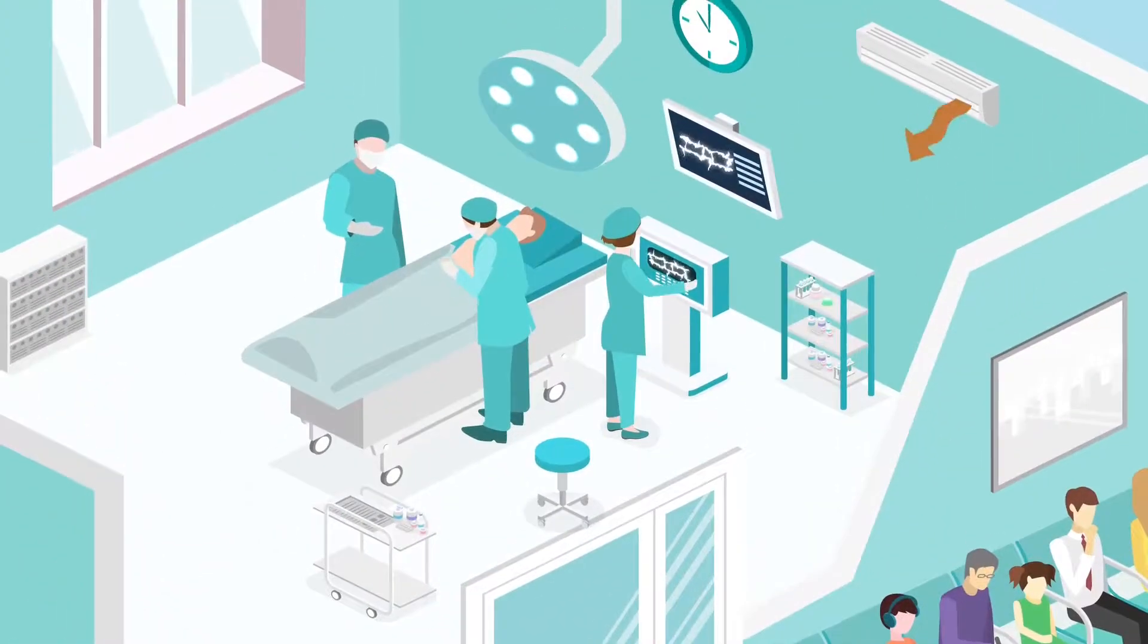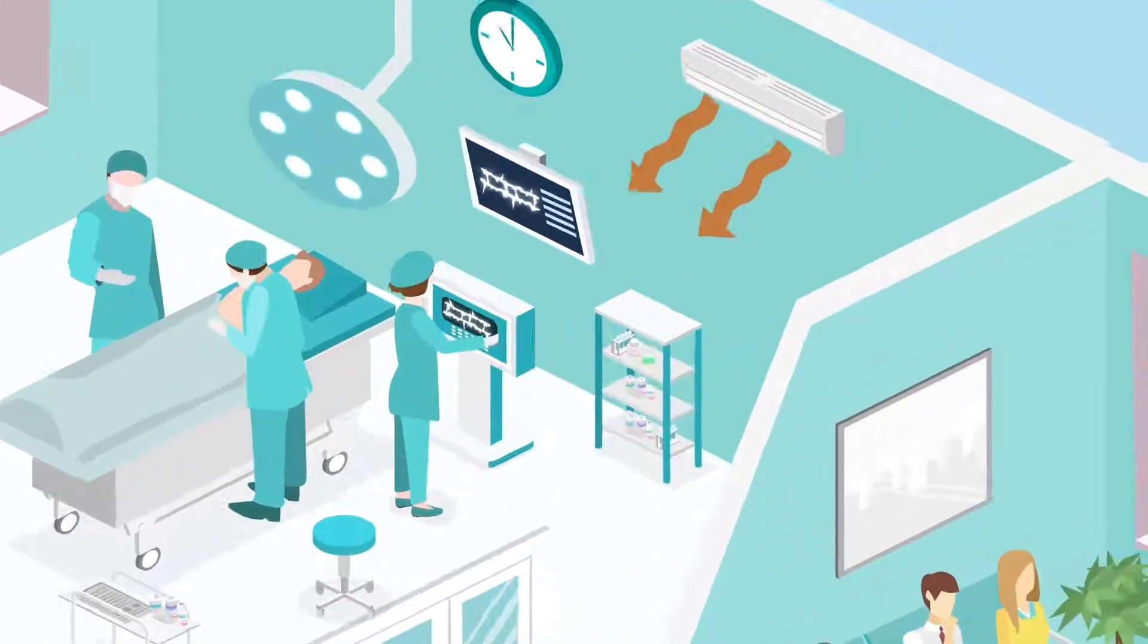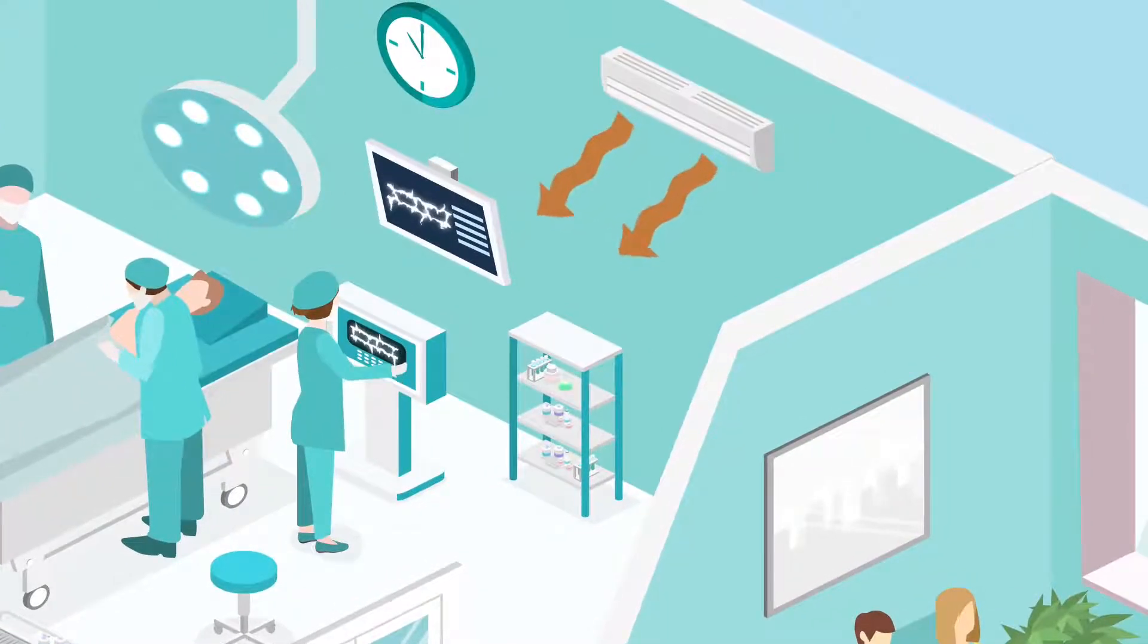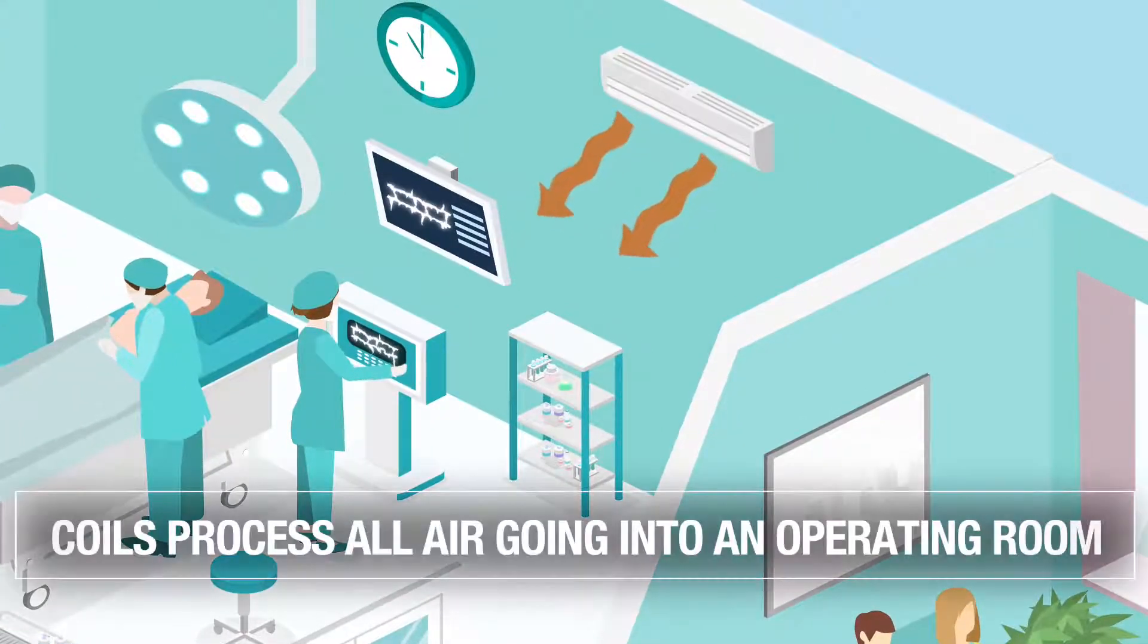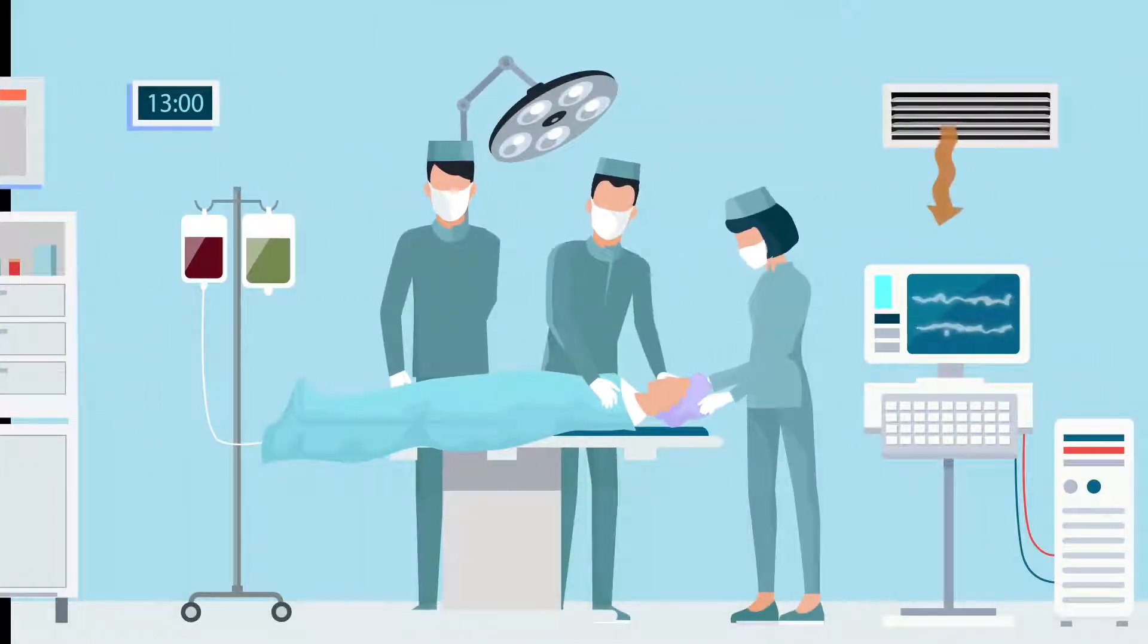In order to perform safe surgeries, hospitals must control the indoor air temperature. This is achieved with heat transfer coils, which process all the air going into an operating room. Because a hospital's indoor air is circulated throughout the entire property,